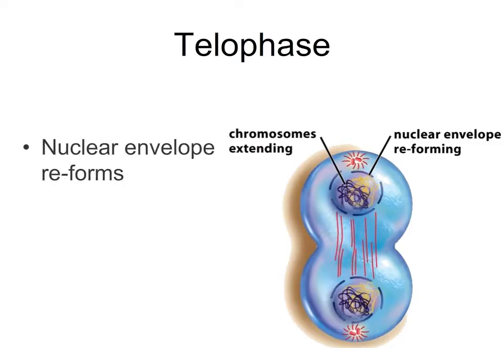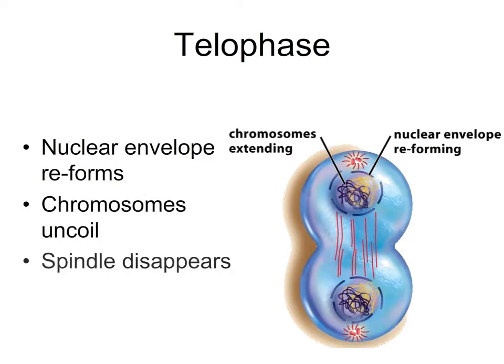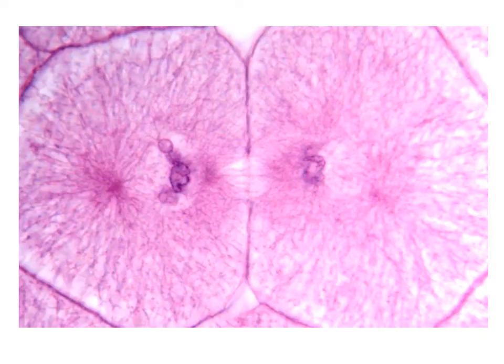In telophase, the nuclear envelope reforms around the two new nuclei, the chromosomes begin to uncoil from their mitosis packaging, and the spindle apparatus disappears. Telophase is also the time in which cytokinesis begins, but remember, cytokinesis is a part of the M phase but not part of mitosis. You can see in this micrograph that the spindle is still visible but the chromosomes are unraveling in two newly formed nuclei, and cytokinesis is clearly underway.